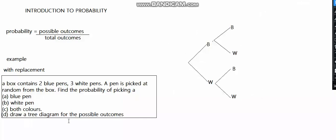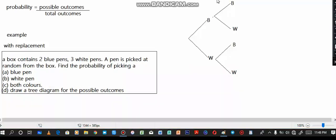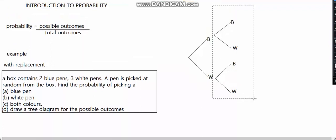For part D, draw a tree diagram for the possible outcomes. We only have two colors, so we have a branch for blue and a branch for white. We only had one selection - only one pen was picked. So we only have one branch. If two pens were picked, it would show the first selection and the second selection.